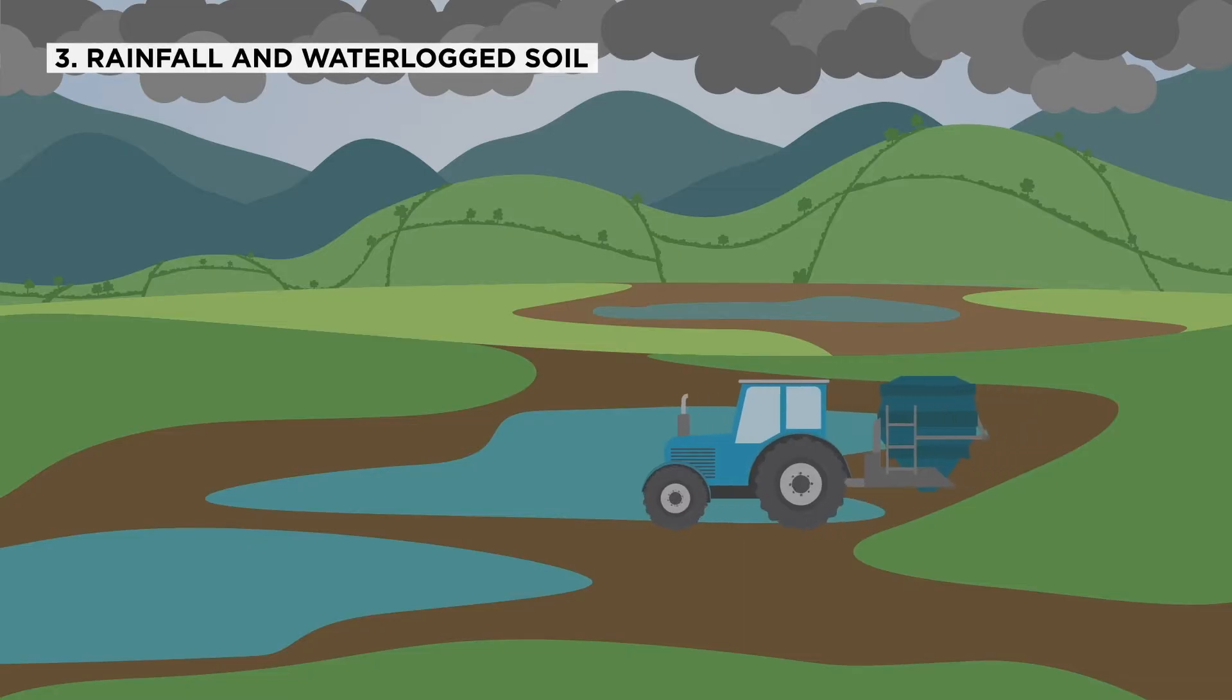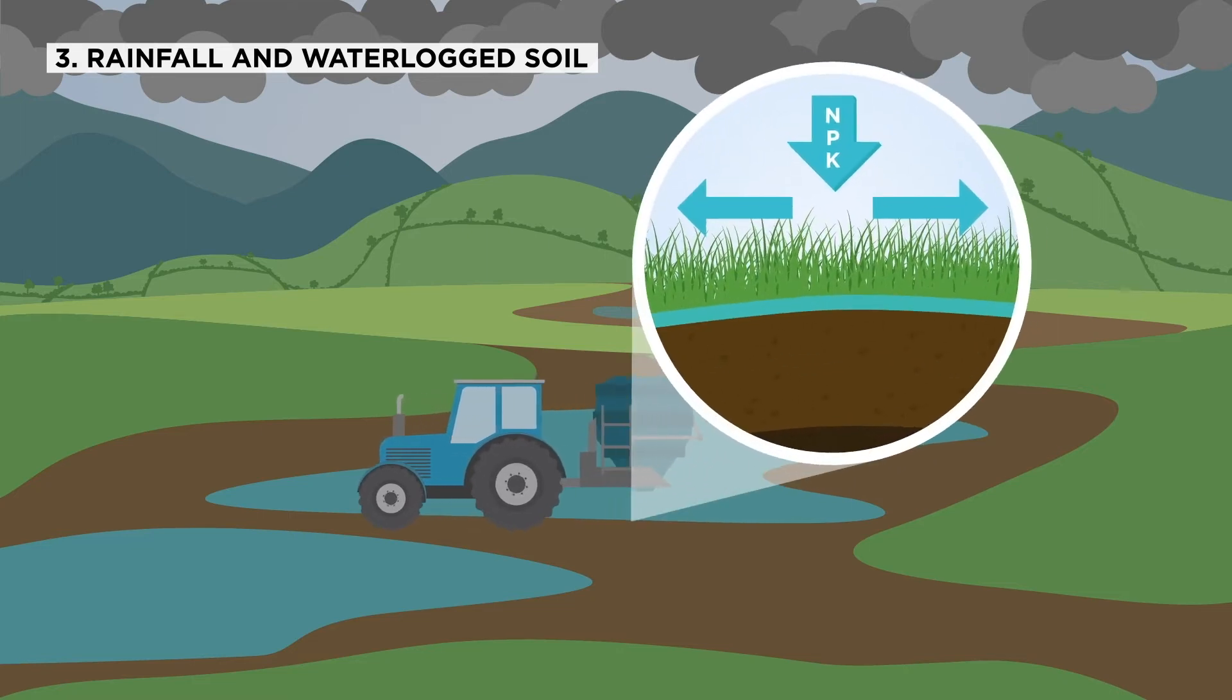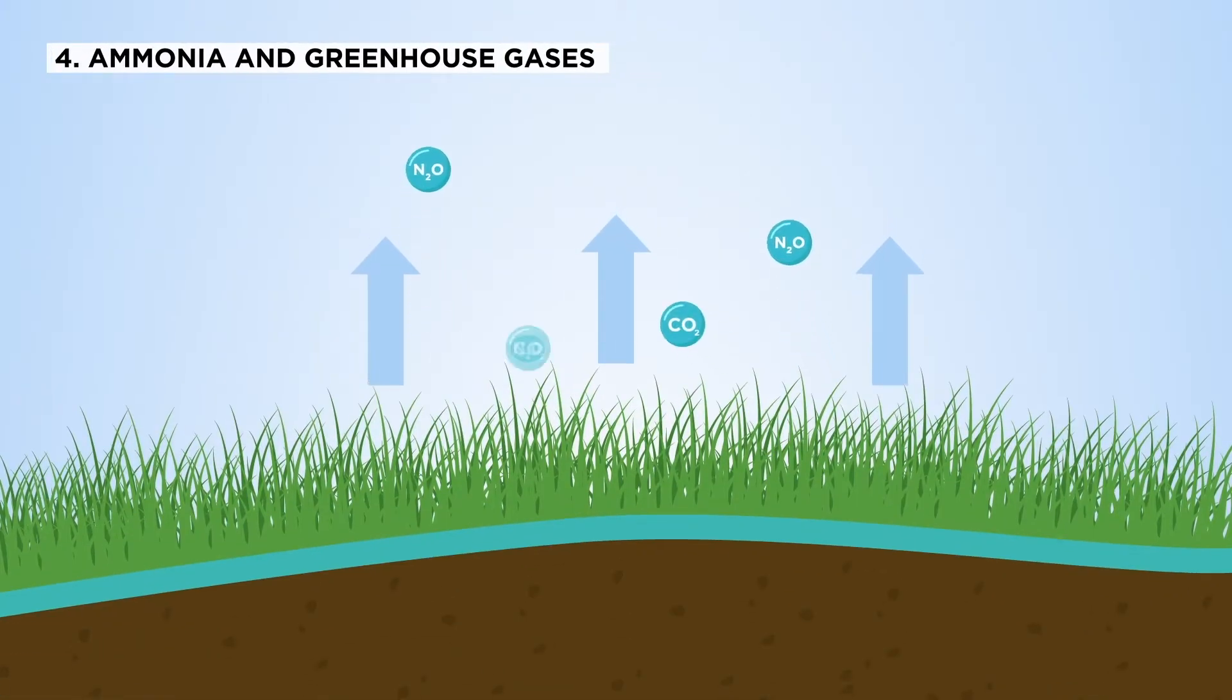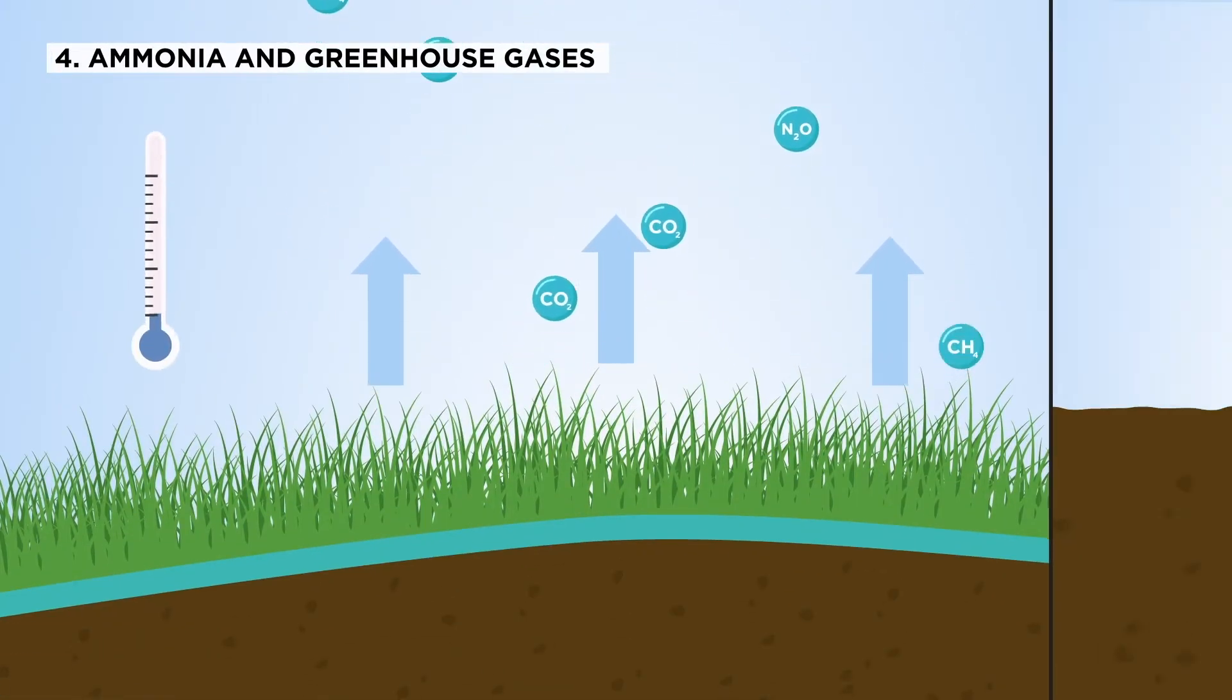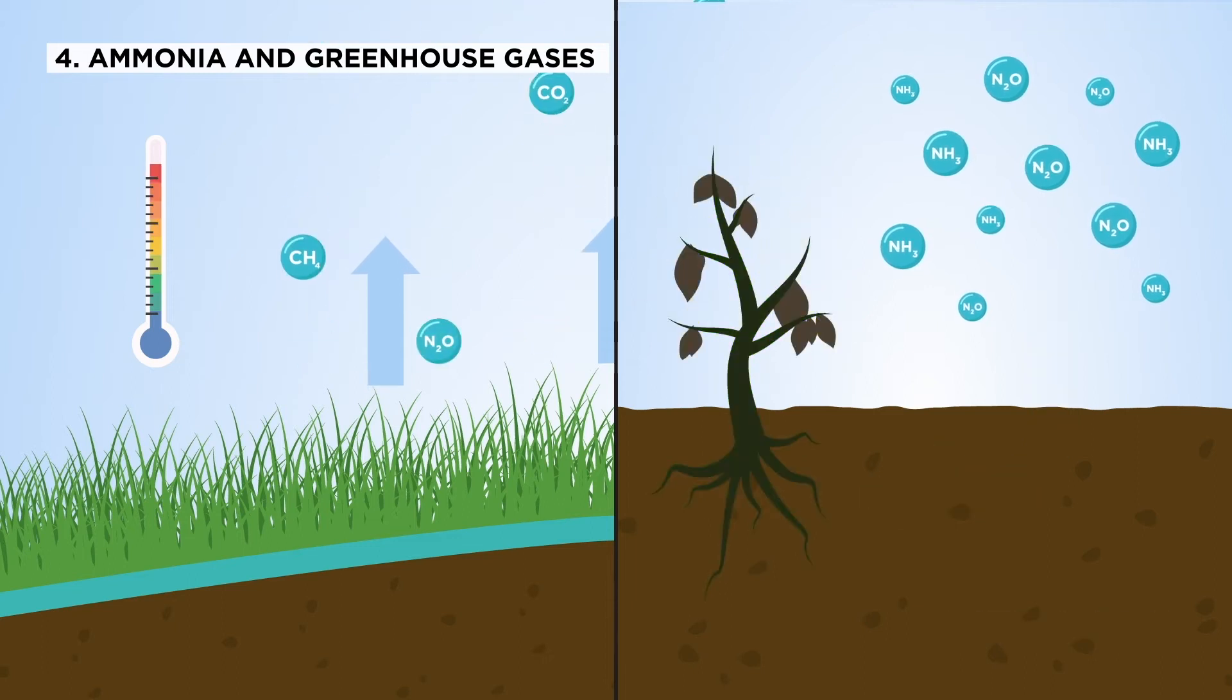Rainfall and storms can also wash nutrients directly into waterways, particularly if soils are already waterlogged. Finally, nutrients can be lost to the air as ammonia or greenhouse gases such as nitrous oxide, carbon dioxide or methane.